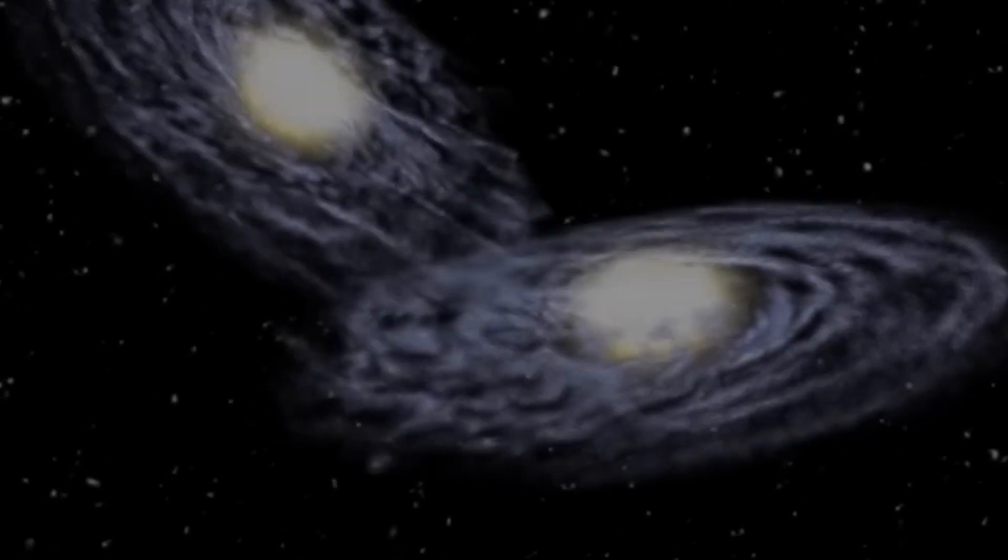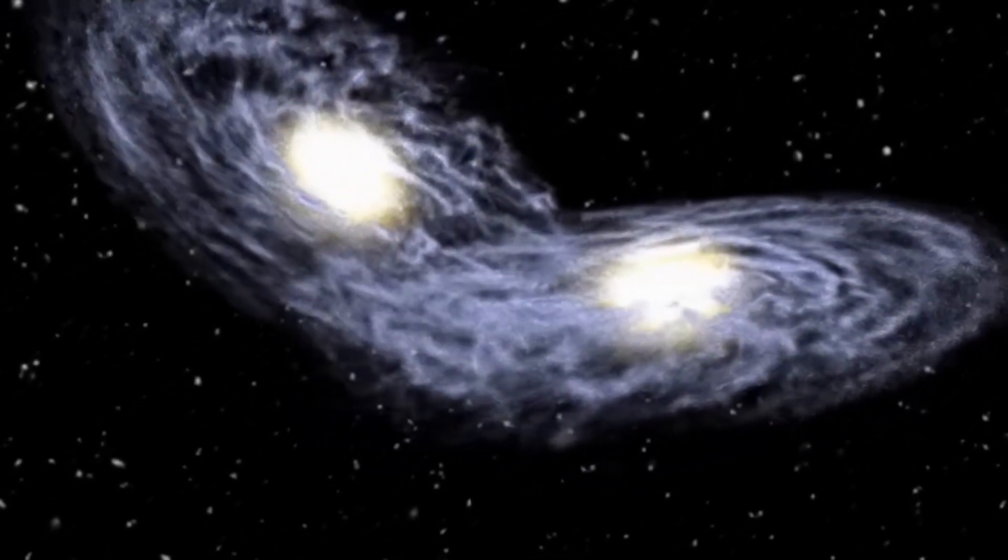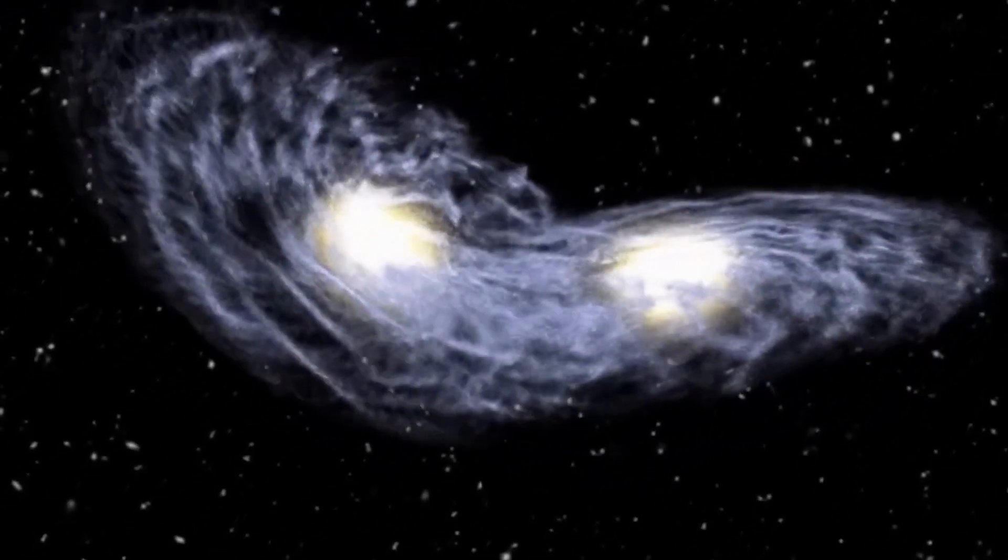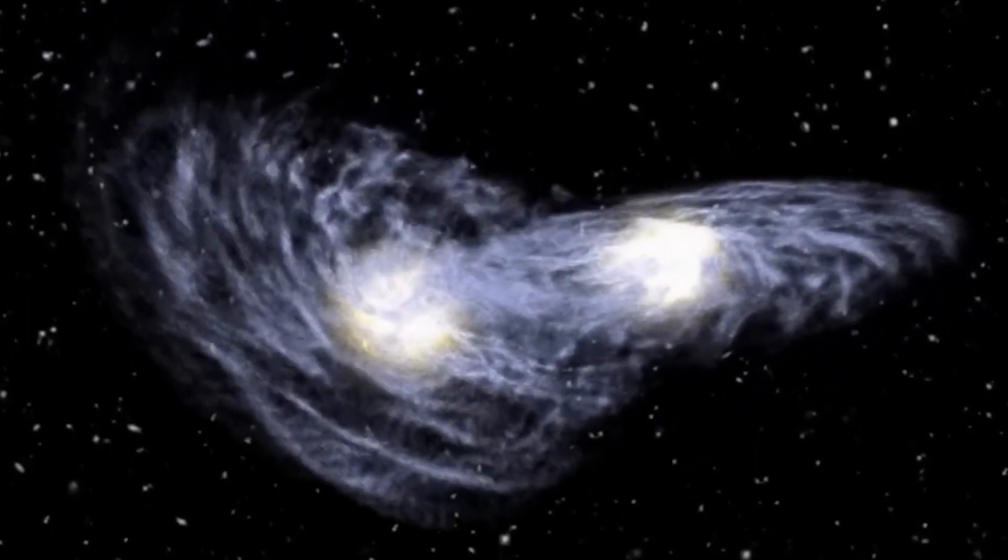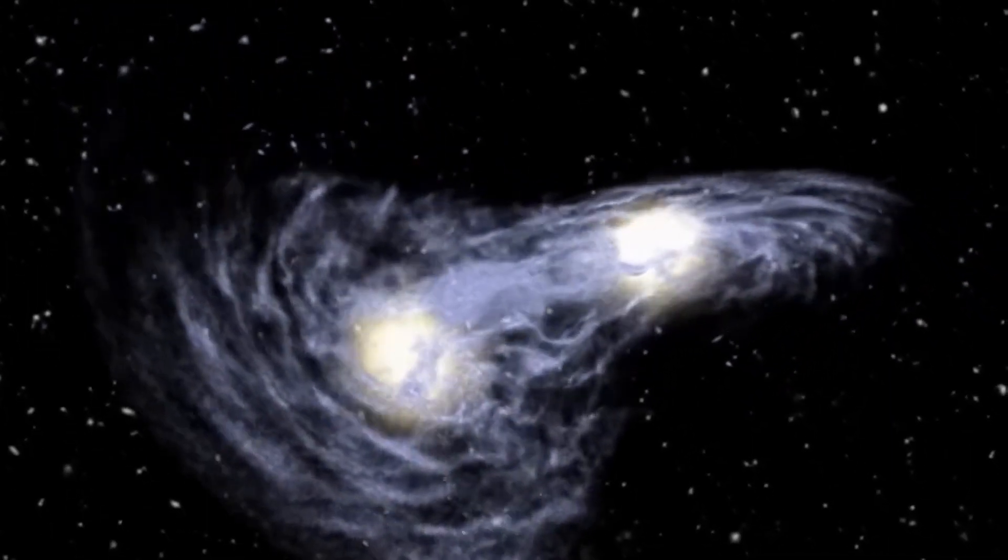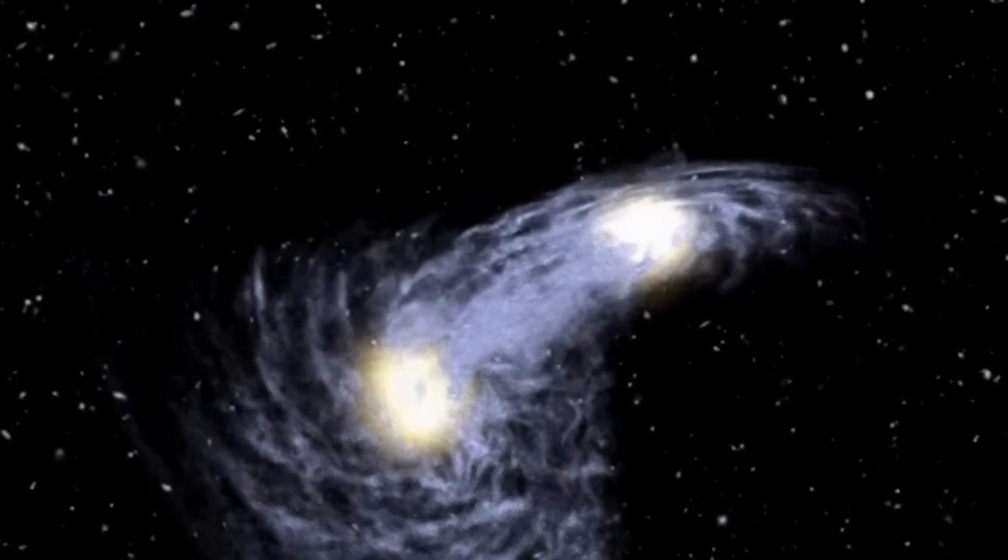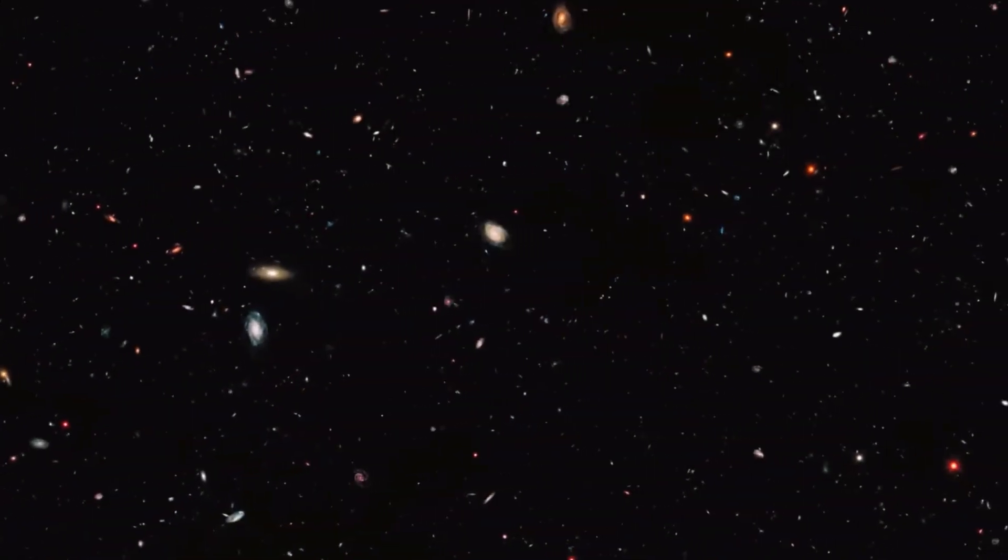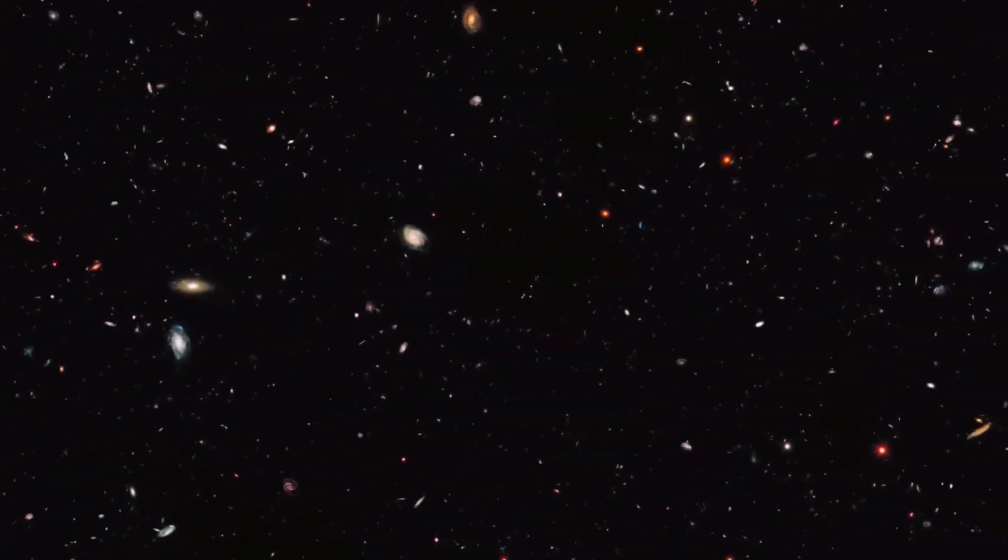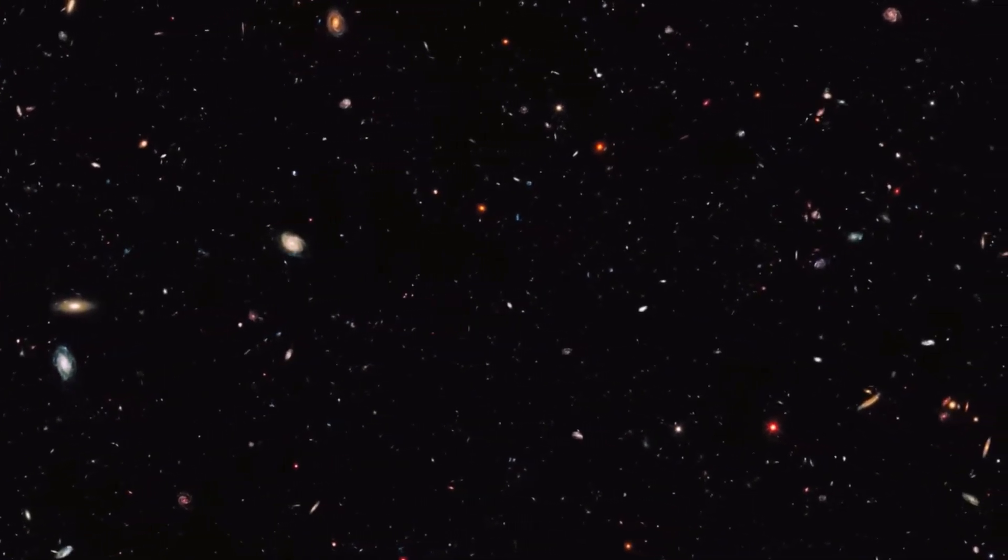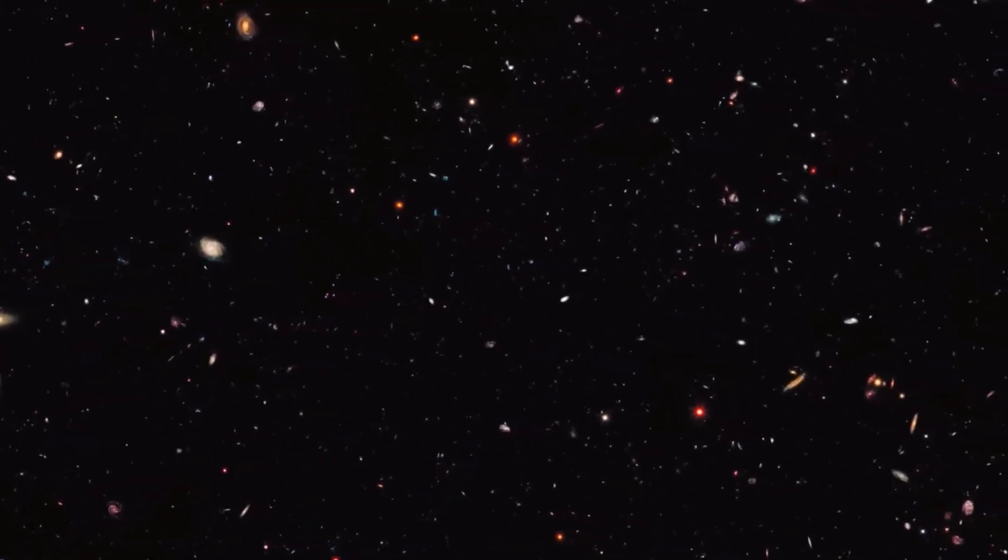Galaxies merge when two or more galaxies come into close proximity and interact gravitationally. As they get closer, the mutual gravitational attraction increases, pulling them towards each other. This causes the stars, gas and dust to become distorted and pull toward the center of the newly formed galaxy.